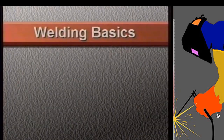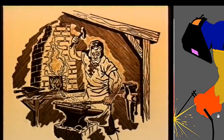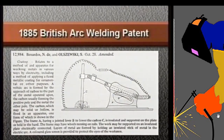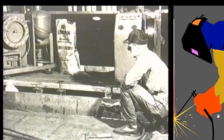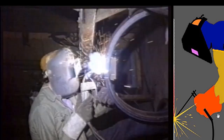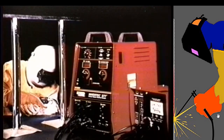The welding process — fusing two pieces of metal together by applying heat and pressure — was discovered sometime around the 14th century. However, it was not until 1885 that two scientists obtained a patent for welding with an electrical arc. Since then, the advances in welding technology have steadily continued, driven by new materials, new techniques, and new requirements.